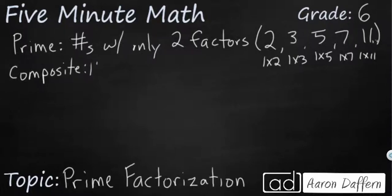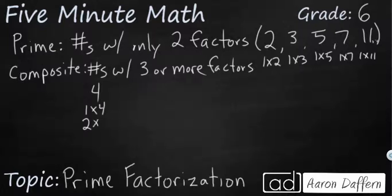Composite numbers are numbers with 3 or more factors. The very first composite number is going to be 4, because I can do 1 times 4 or 2 times 2. So when we're listing the factors of 4, we're going to say it has three factors: 1, 2, and 4. You put them in order and you don't list the 2 twice. Every other even number is going to be composite besides 2. 2 is our only even prime number, because every even number can be divided by 2.